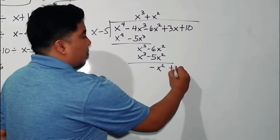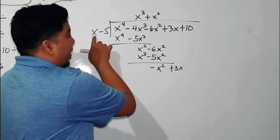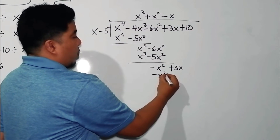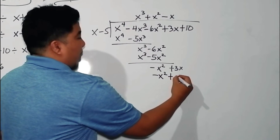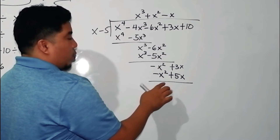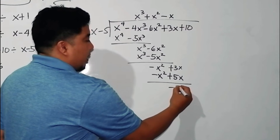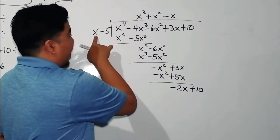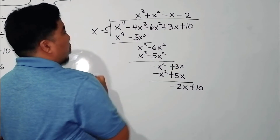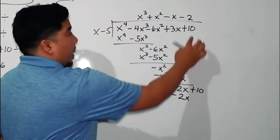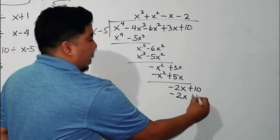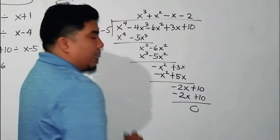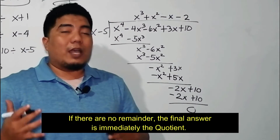Bring down the next term, which is 3x. Negative x squared divided by x is negative x. Negative x times x is negative x squared; negative x times negative 5 gives positive 5x. Subtract: the answer is 0. 3 minus 5 gives negative 2x. Bring down the last term, which is 10. Negative 2x divided by x is negative 2. Negative 2 multiplied by the divisor gives negative 2x and positive 10. Both terms are identical, so subtracting gives 0.